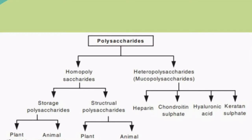Polysaccharides, or glycans, are carbohydrates which on hydrolysis yield many number of sugar units. They are classified into homopolysaccharides and heteropolysaccharides. Homopolysaccharides yield the same type of sugars, whereas heteropolysaccharides on hydrolysis yield different types of sugars or sugar derivatives.